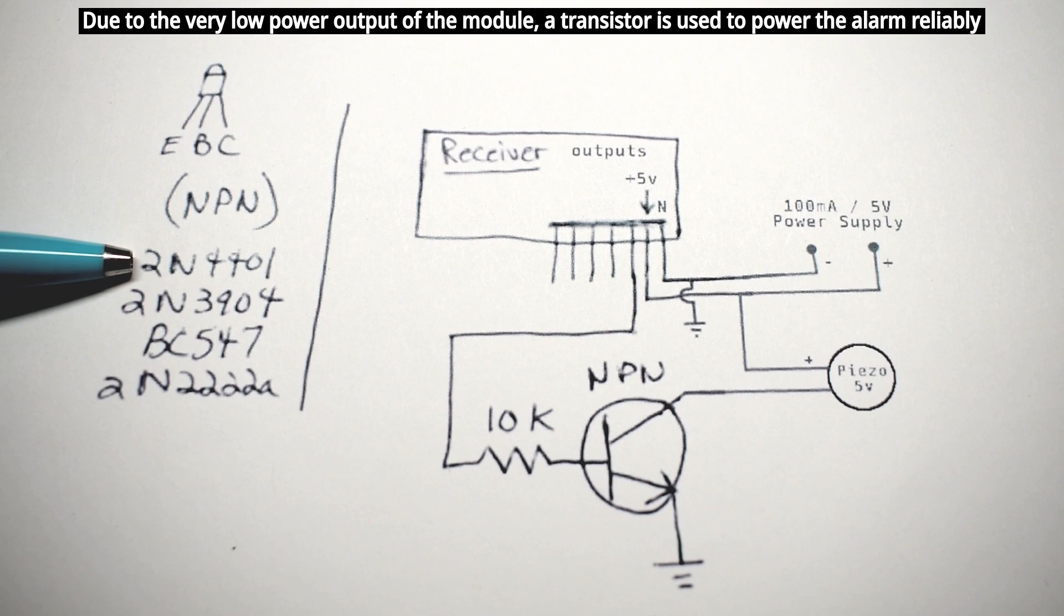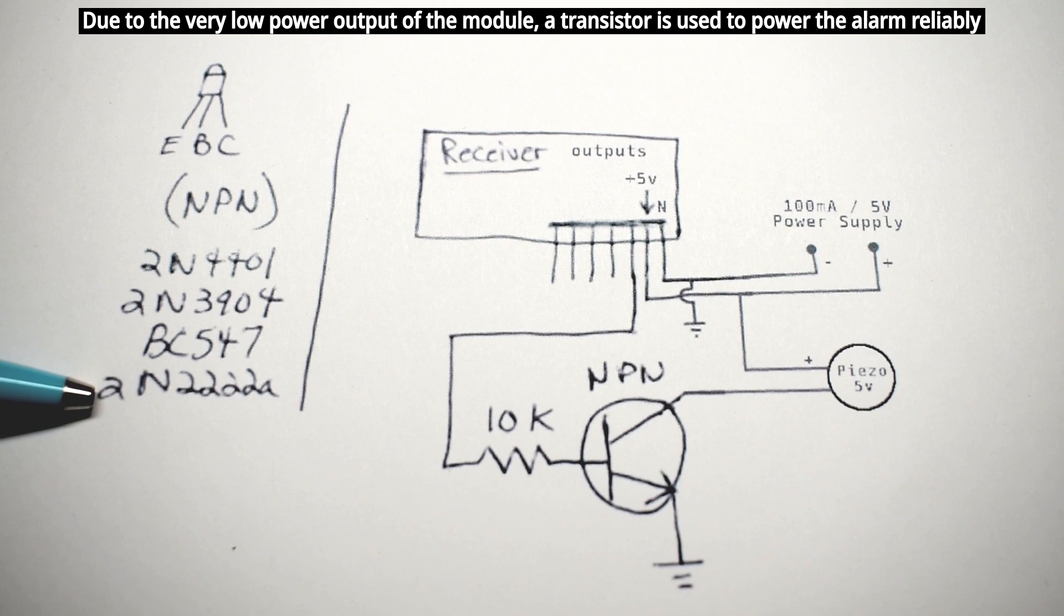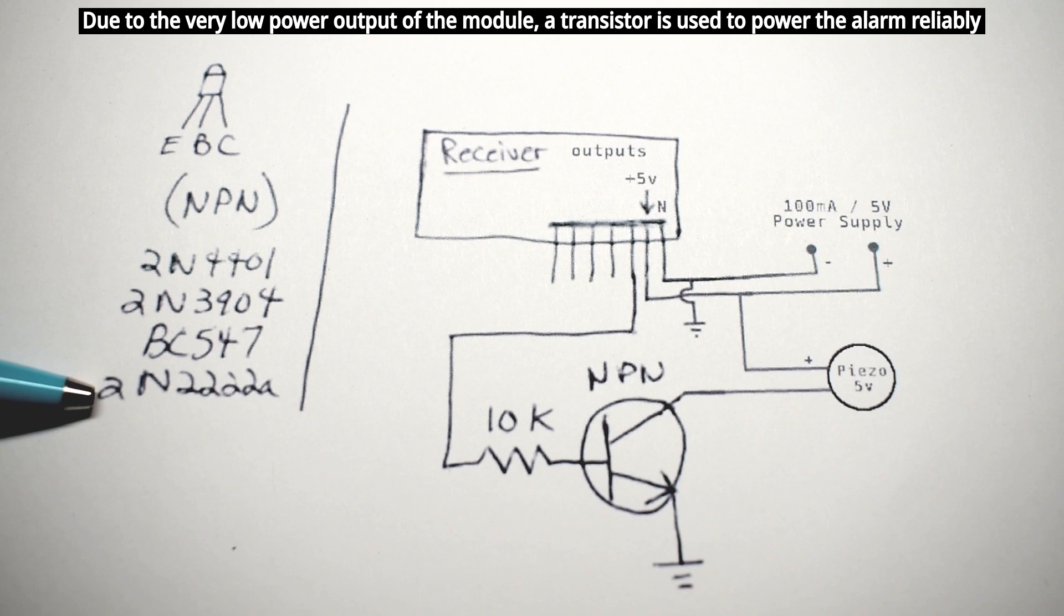You can use many different types, 2N4401, 2N3904, BC547, or a 2N2222A. Emitter goes to battery negative.